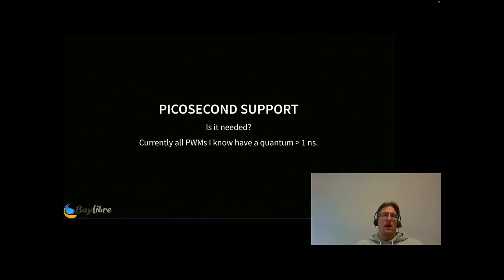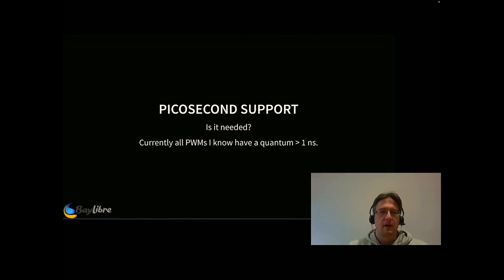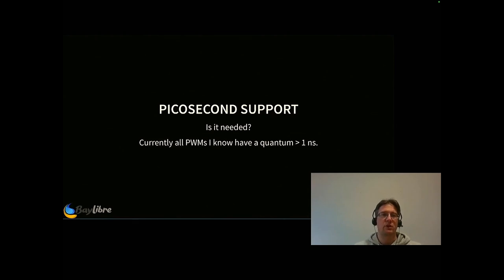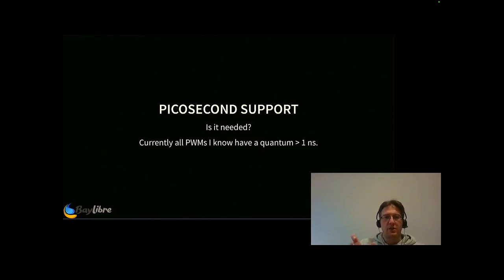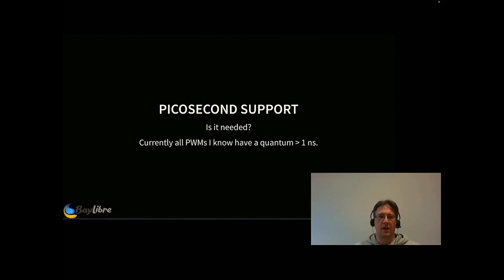The next and last wishlist item is picosecond support. I found this implemented in a kernel vendor tree. However, I'm convinced the answer to whether it's needed is no, because all PWM chips known to me don't have a resolution that would justify it — if I minimally reconfigure the output, the changed period differs by more than one nanosecond. So I don't gain anything if I can specify the period in picoseconds when chunks of 1000 picoseconds give me the same configuration anyway. Correct me if I'm wrong.